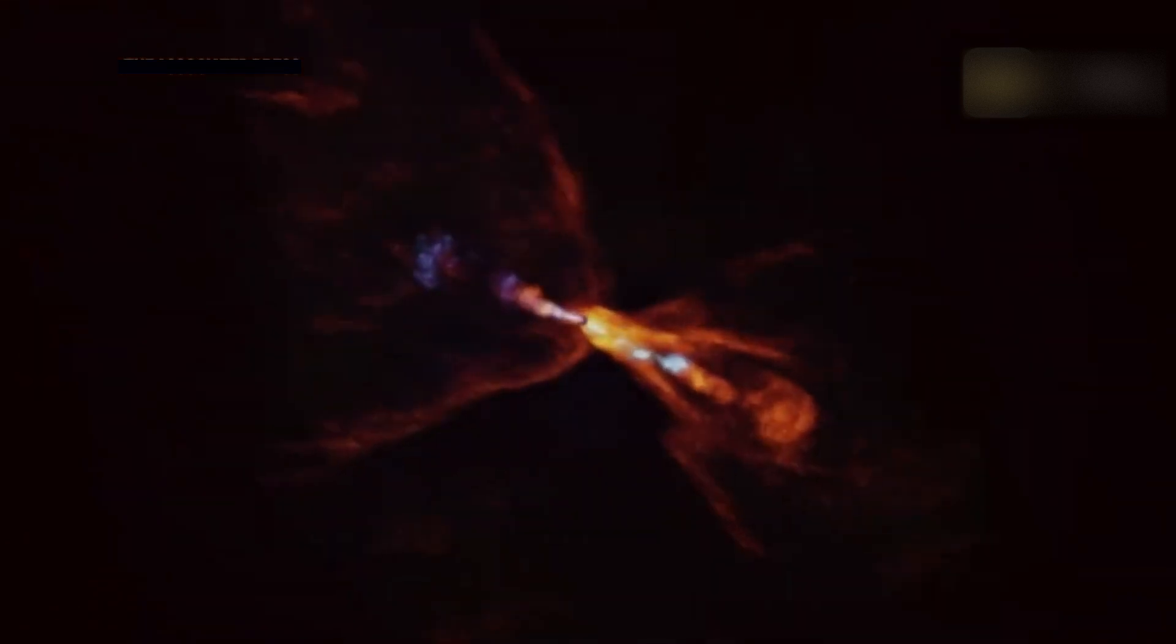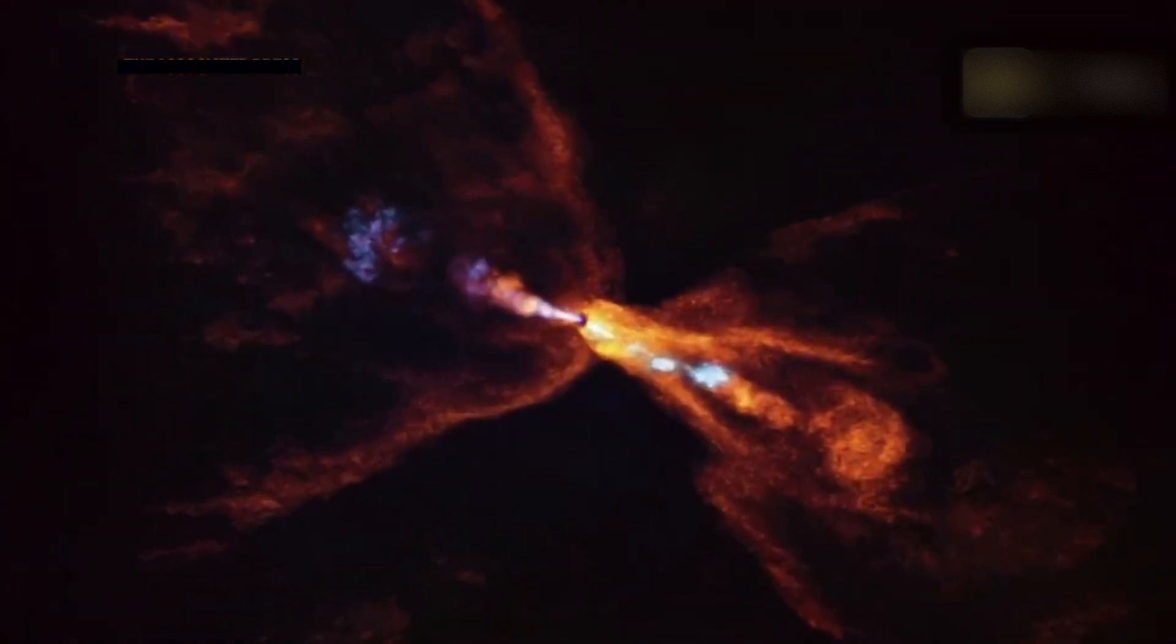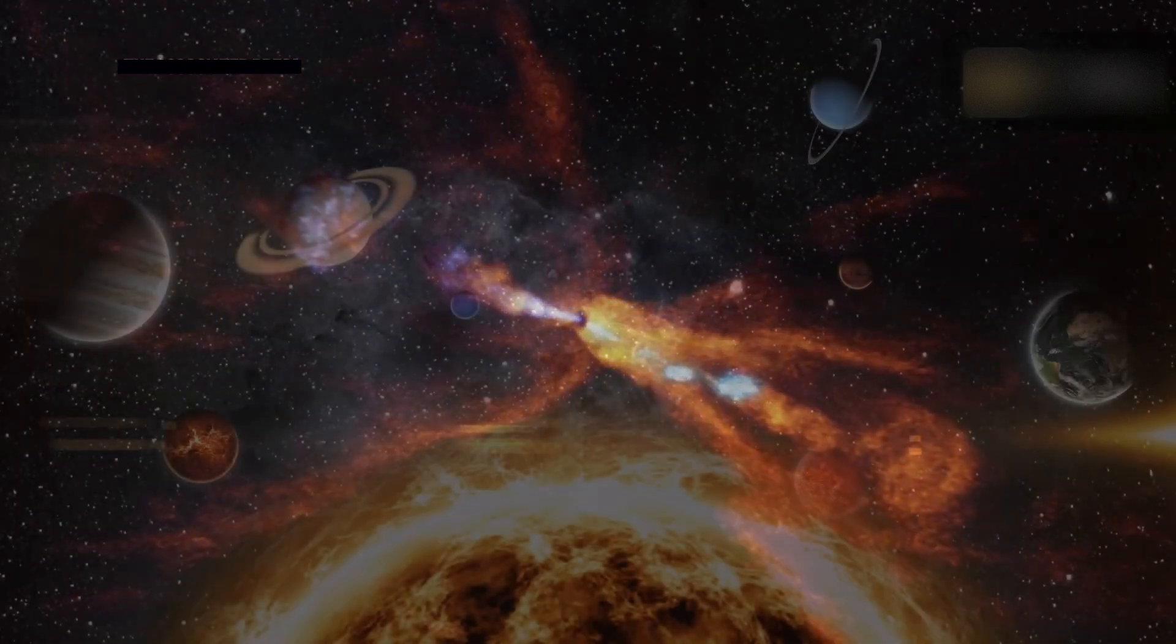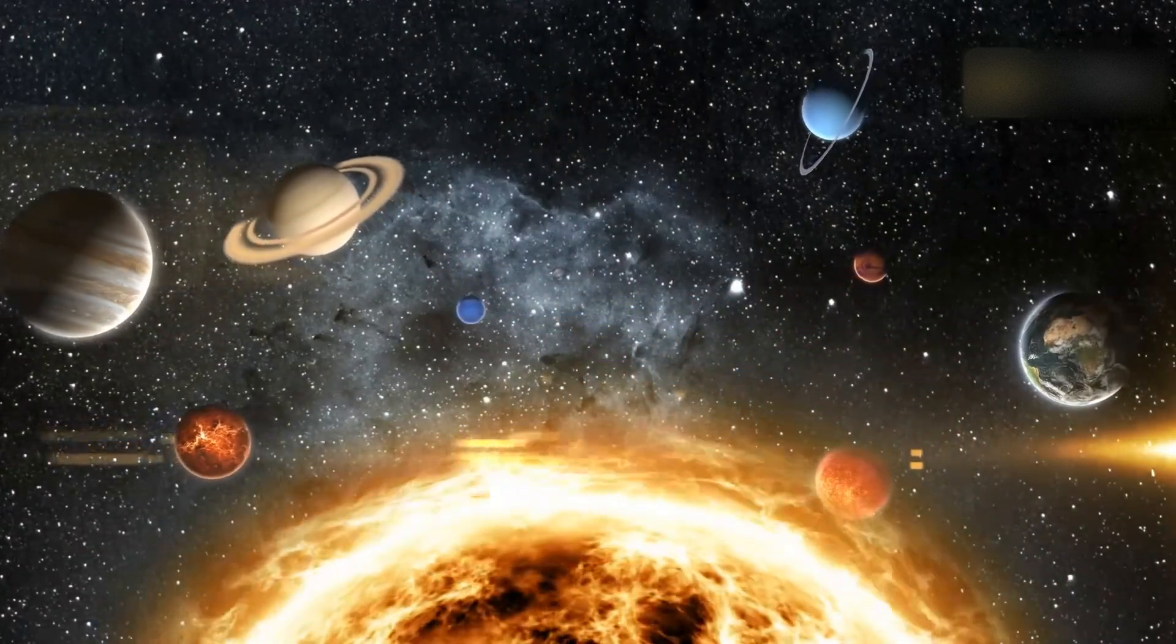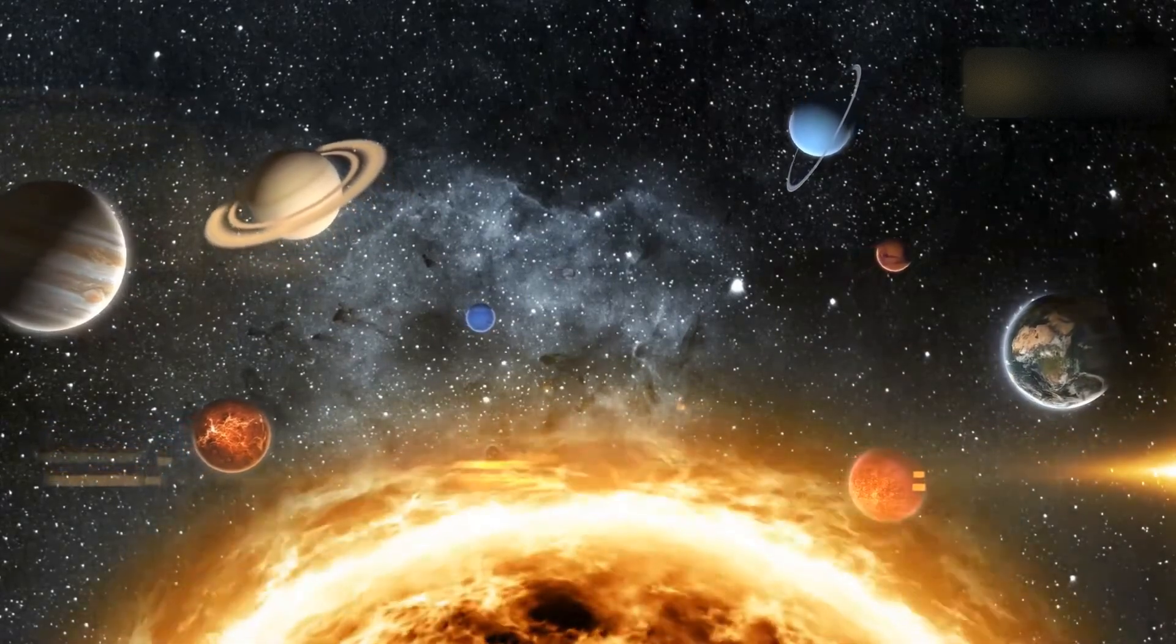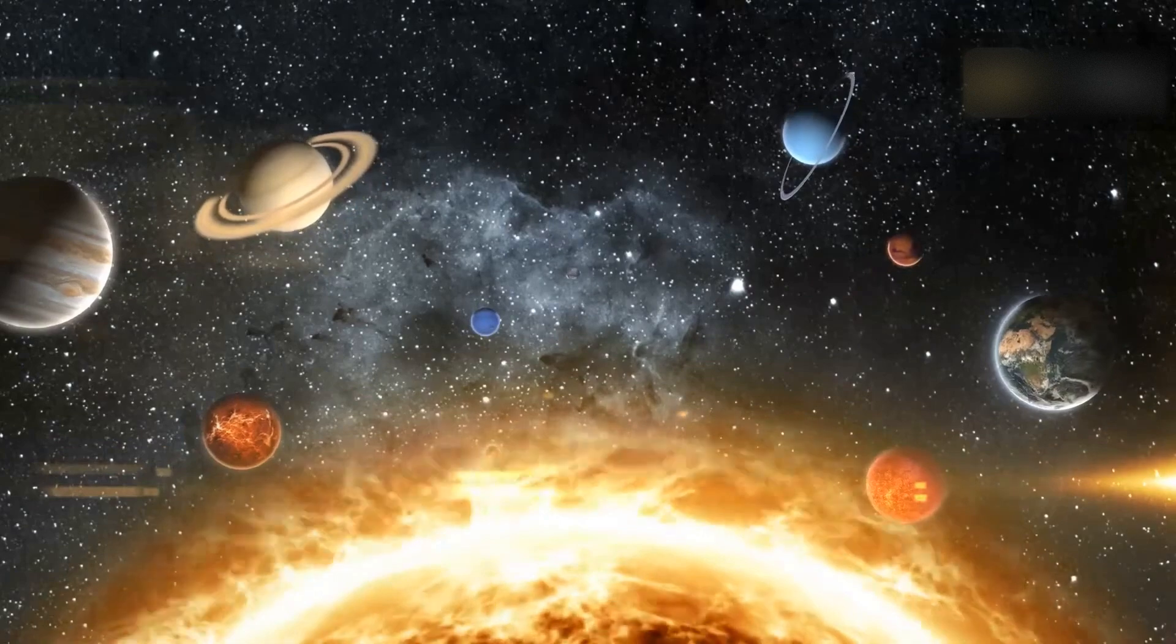NASA's Webb Space Telescope and the European Southern Observatory in Chile teamed up to unveil these early nuggets of planetary formation around the young star known as HOPS 315. It's a yellow dwarf in the making, like the Sun, yet much younger at 100,000 to 200,000 years old and some 1,370 light-years away.